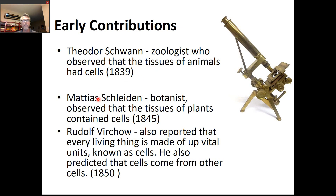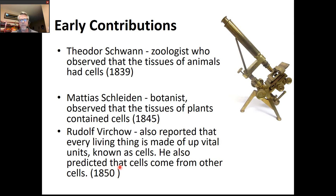Shortly thereafter, Matthias Schleiden, a botanist, came to the same realization regarding plant cells — plants are also made of cells. By 1845, scientists realized that plants and animals are made up of cells. Rudolph Virchow pulled it together, figuring out that every living thing is made up of cells, and he predicted that cells come from other cells. Back in 1850, that was a revelation.